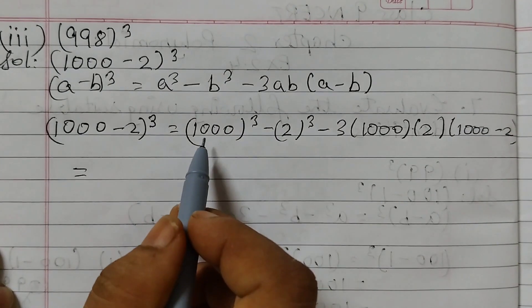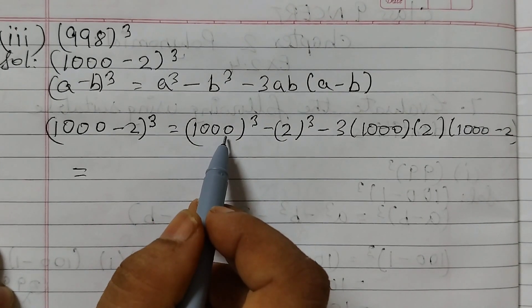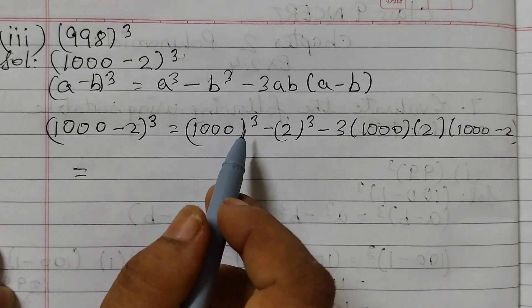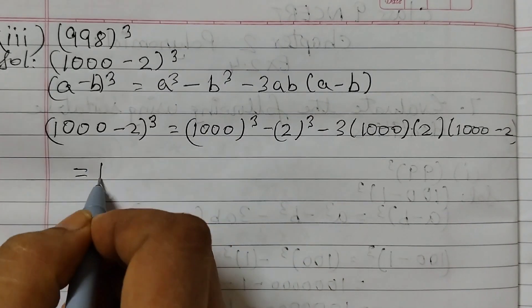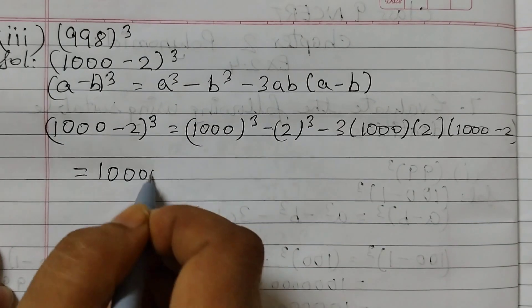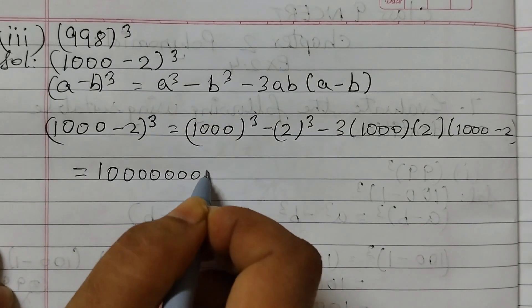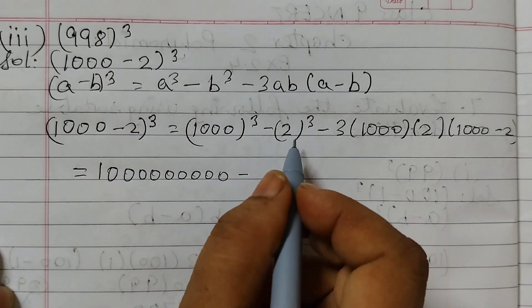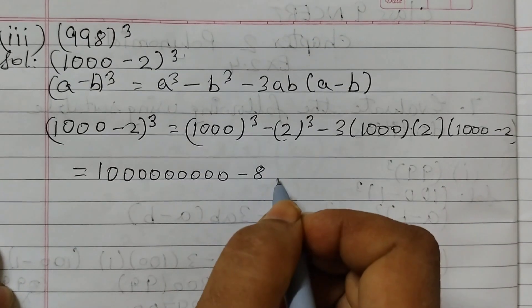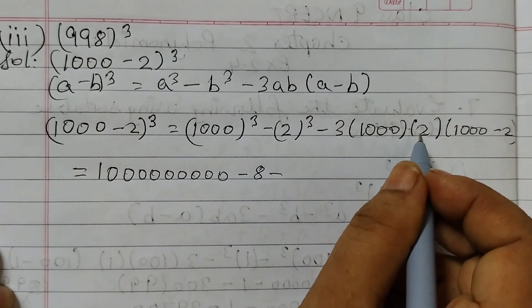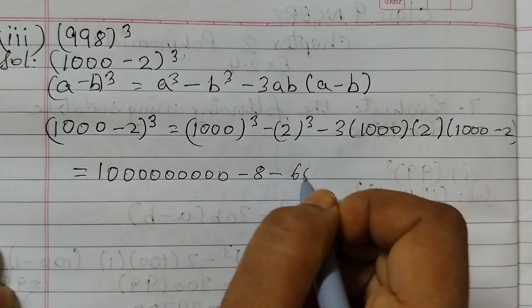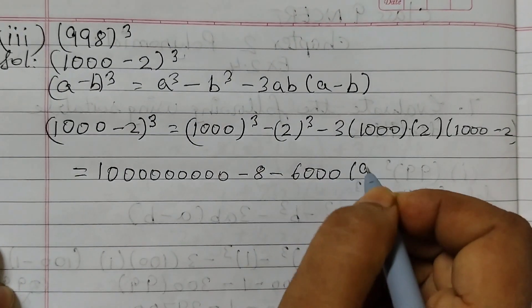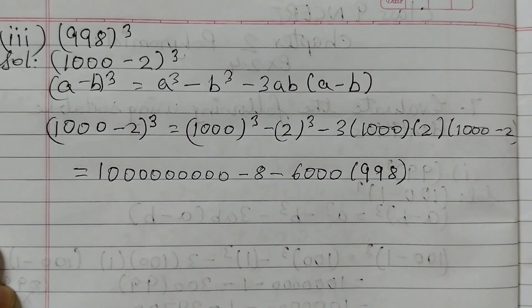Expanding: 1000³ minus 2³ minus 3 × 1000 × 2 × (1000 - 2). Now 1000³ has 9 zeros, giving 1,000,000,000. Then 2³ = 8, and 3 × 1000 × 2 = 6000, with (1000 - 2) = 998.